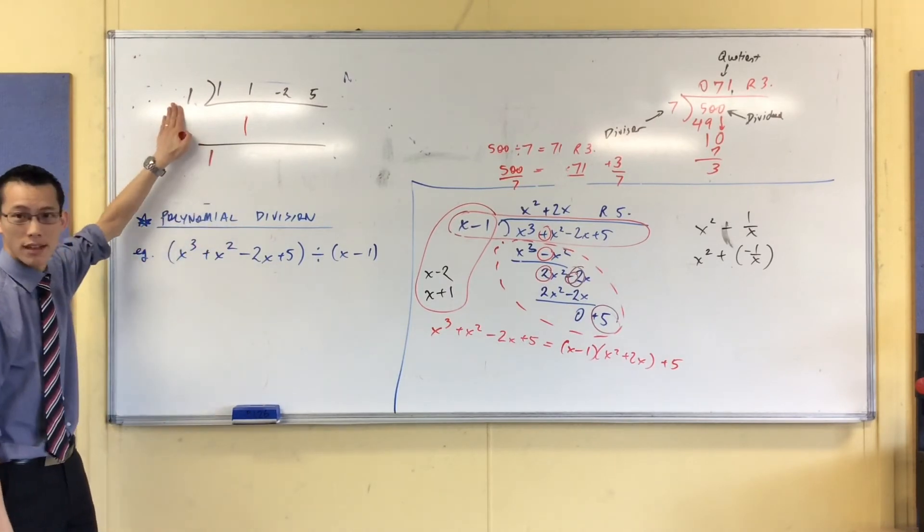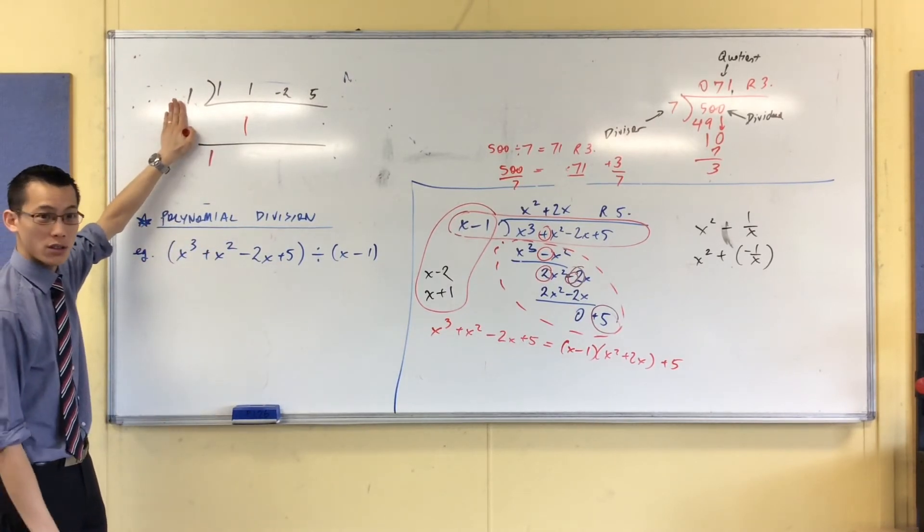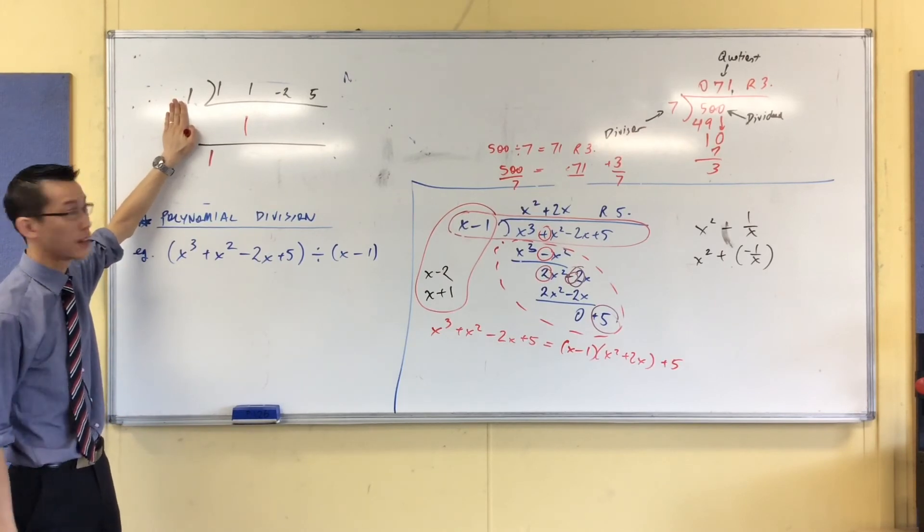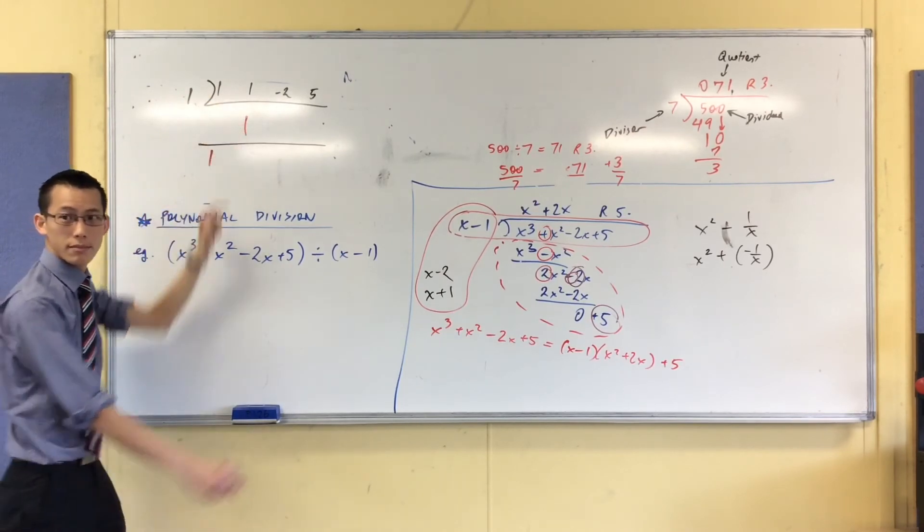So I did 1 times 1. And this is the opposite of what I want to do. So instead of subtraction, I've turned it to addition. So what's 1 plus 1? 2.